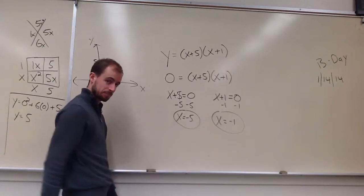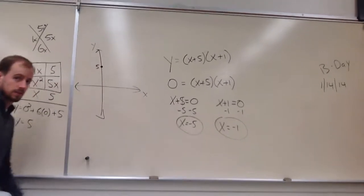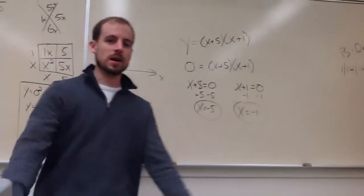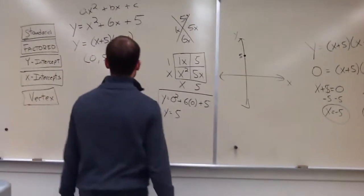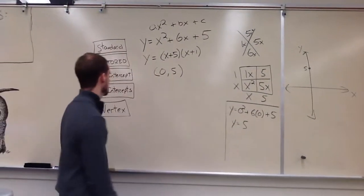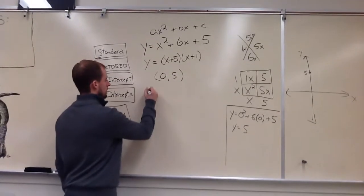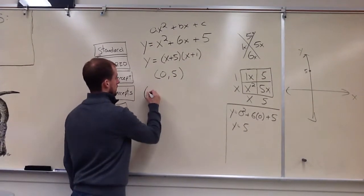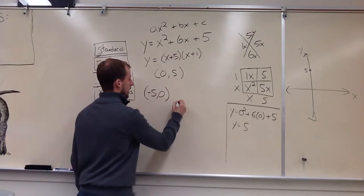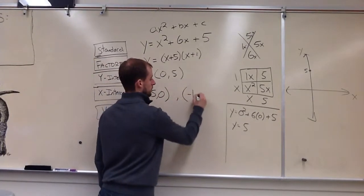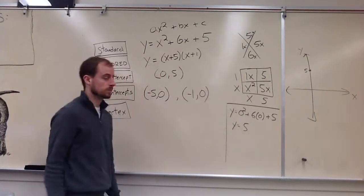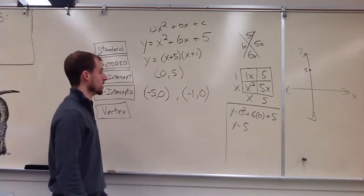And now I can go back this way. Moving back, moving back, moving back. Ugh, dizzy yet? Okay. Now I can write my x-intercepts. My x-intercepts are at negative 5, 0, and negative 1, 0, using the zero-product property.